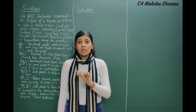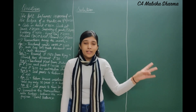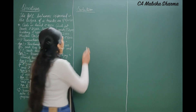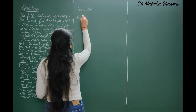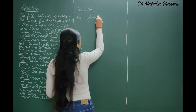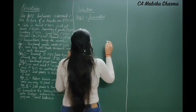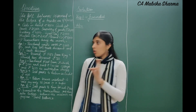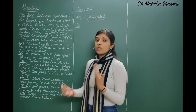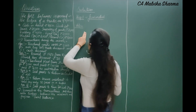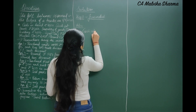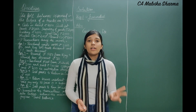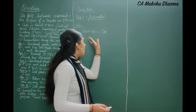Journal entries require: date, particulars, ledger folio, debit in rupees, and credit in rupees. I am not making the full format here — you will make the format and I will fill in the journal entries. Step one: we make the journal where we record all transactions. The date for the opening entry will be 1st April 2020.